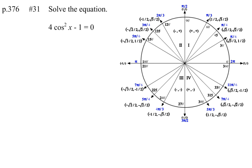Page 376, problem number 31. Solve the equation: 4 times the cosine squared of x minus 1 is equal to 0.